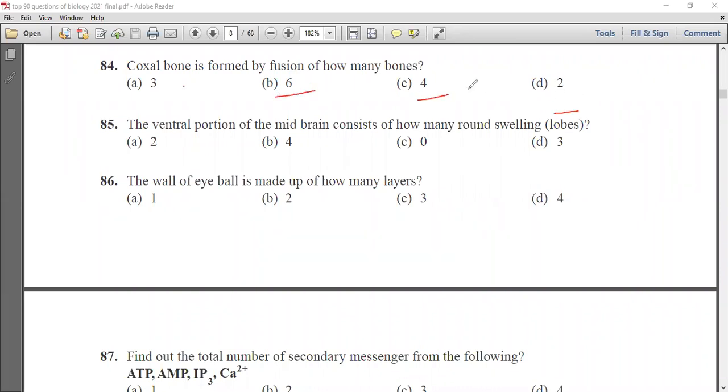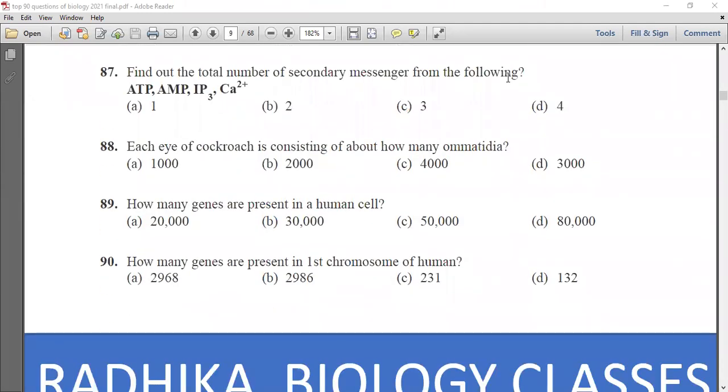Coxal bone is formed by fusion of how many bones? 3, 6, 4 or 2. It is formed by fusion of 3 bones. The ventral portion of midbrain consists of how many round swellings? 2, 4, 0 or 3. It consists of 0 round swellings. The wall of eyeball is made up of how many layers? 1, 2, 3 or 4. Wall of eyeball is made up of 3 layers.